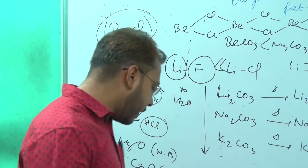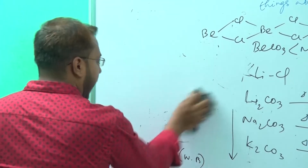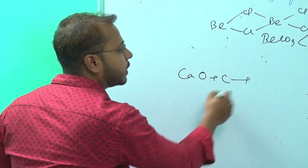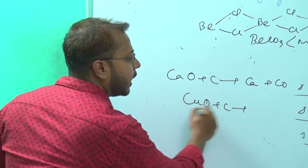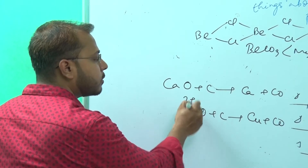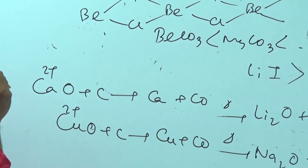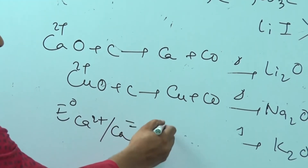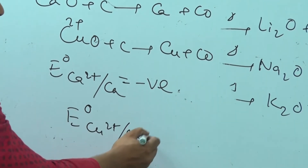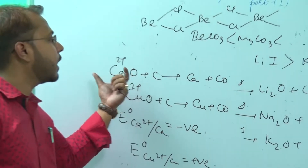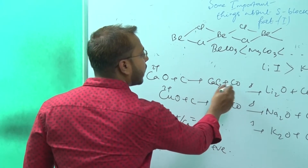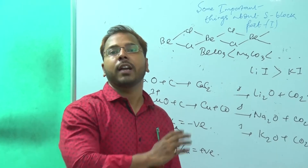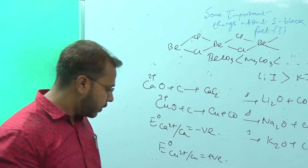Why can't alkali metals and alkaline earth metals be obtained by carbon reduction? Because the metallic property of Ca2+ is much higher than Cu2+. The reduction potential of calcium is negative, while the reduction potential of copper is much more positive. So copper can easily be reduced by carbon reduction, but calcium cannot. When calcium oxide reacts with carbon, it forms calcium carbide instead of free calcium. That is why these metals cannot be obtained by carbon reduction method.